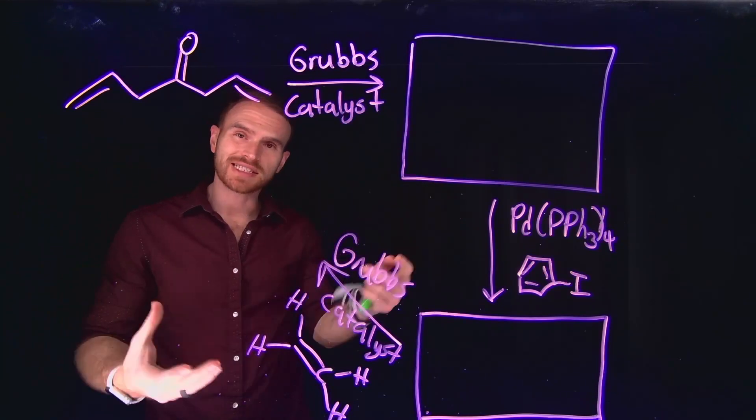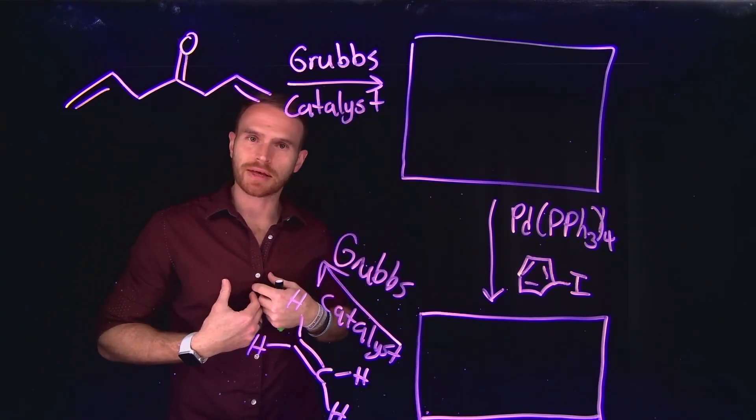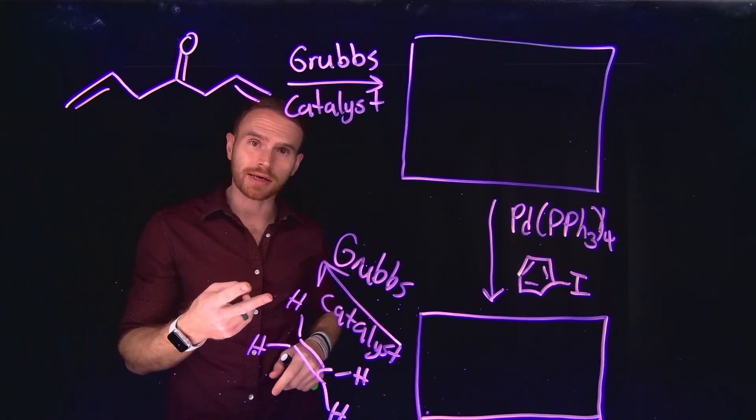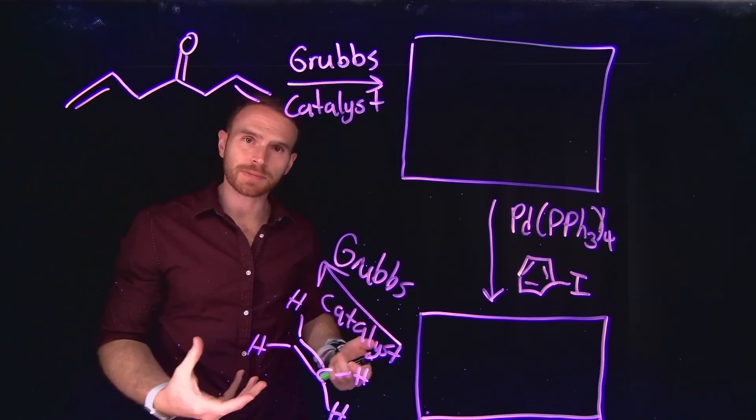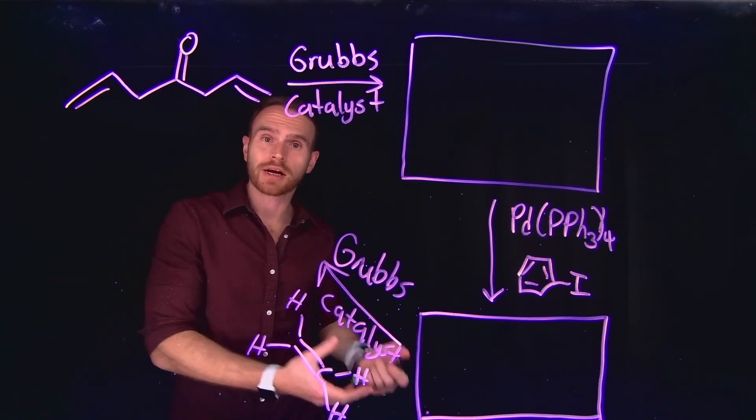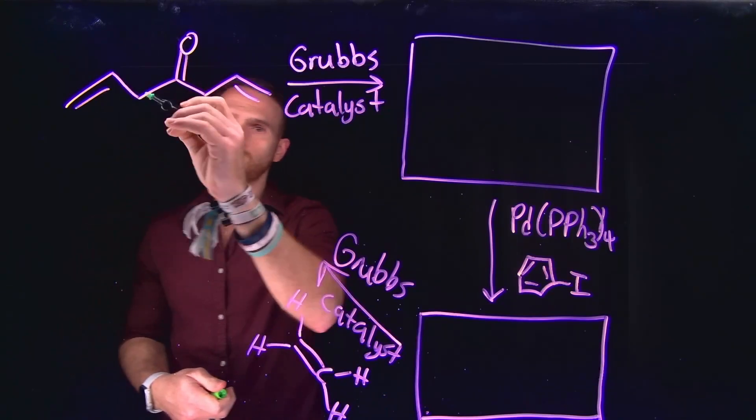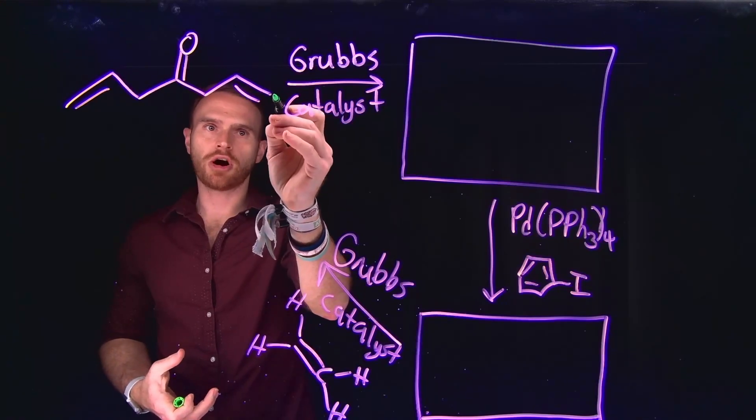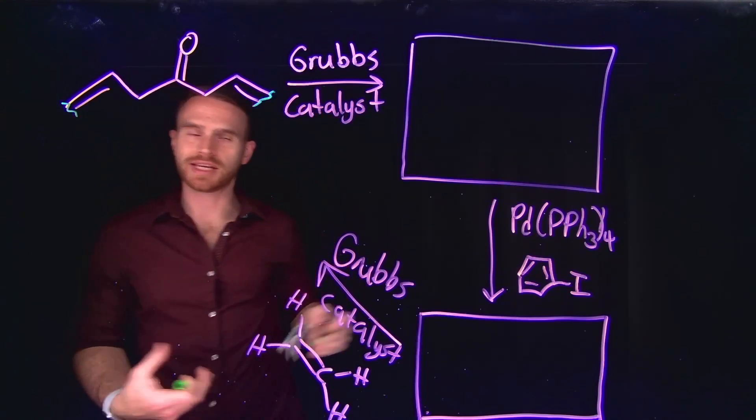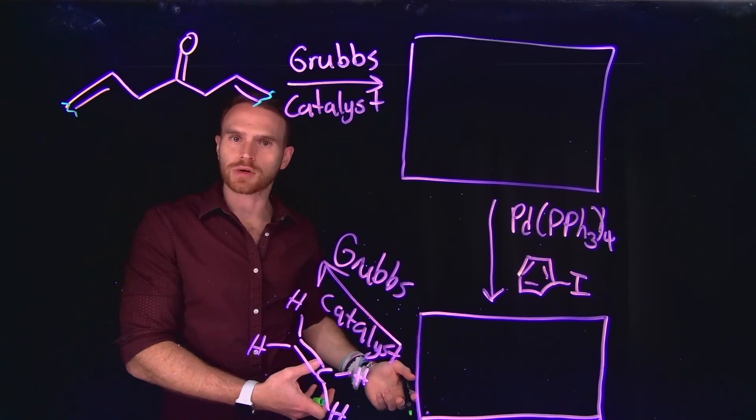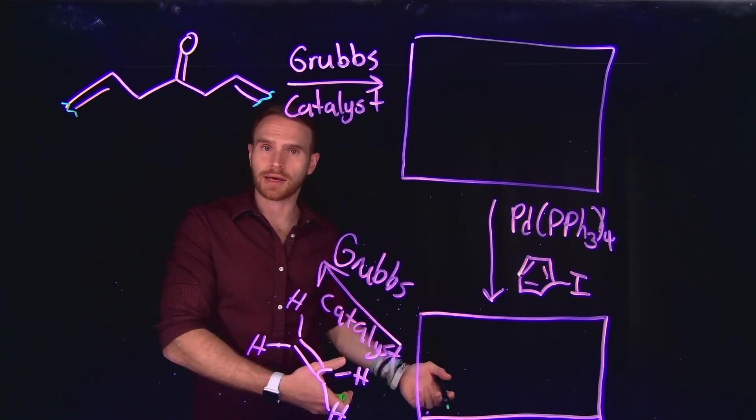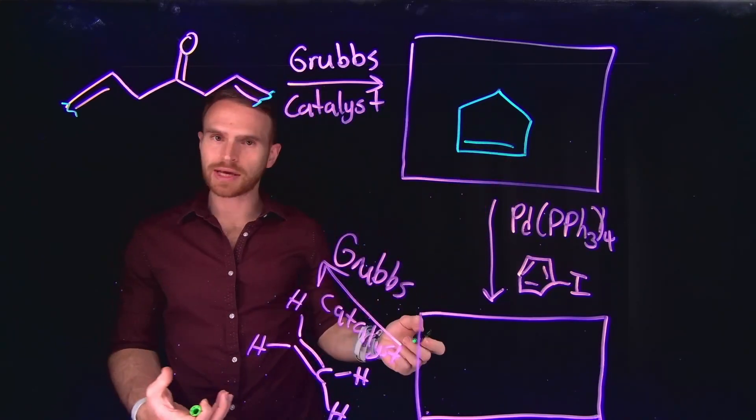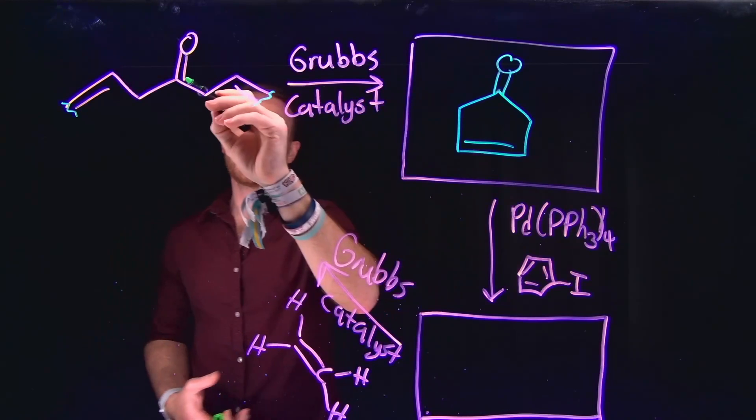For the first reaction, I see that we're using a Grubbs catalyst, which indicates to me that we're doing some version of olefin metathesis. And since we have a molecule that contains two alkene or olefin functional groups on it, that lets me know that I'm likely to be performing what is called ring-closing metathesis. So if I do ring-closing metathesis, then remember, I'm going to be exchanging the substituents on these different R groups. So I see that there's going to be an exchange here. That dialkene is going to turn into a single alkene, which lets me know that my product is going to be a five-membered ring with an alkene at the bottom, and I will still be left with that initial ketone.